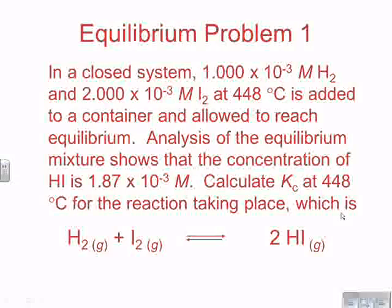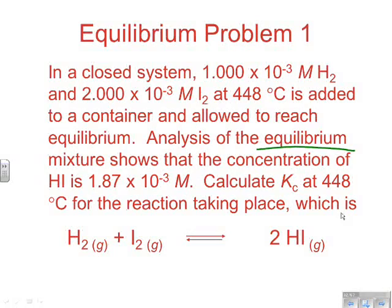Here's an equilibrium problem. In a closed system, 1.000 times 10 to the negative third molar H2 and 2.000 times 10 to the negative third molar I2 at 448 degrees Celsius is added to a container and allowed to reach equilibrium. Analysis, one thing that tells me right away, I don't have any product at the beginning. Analysis of the equilibrium mixture shows that the concentration of HI is 1.87 times 10 to the negative third molar. That's going to be our product here, and that would be at equilibrium. So I started out with no product at equilibrium. I know I'm going to have that much. And that is going to really simplify things. When they tell you you've got this equilibrium concentration, that's going to make it the easiest type of problem yet. It asks to calculate Kc at 448 degrees Celsius for the reaction taking place. The reaction would be H2 plus I2, a simple synthesis reaction to make 2HI.